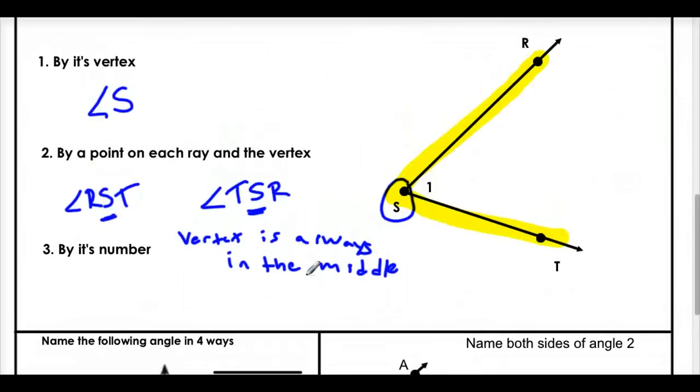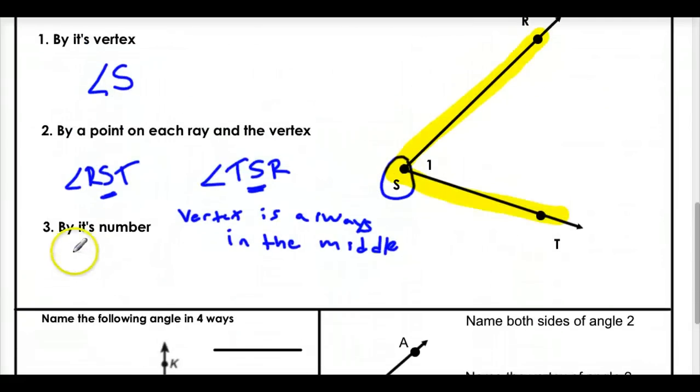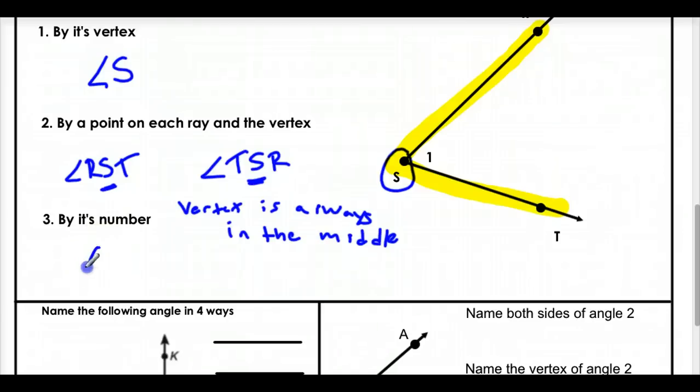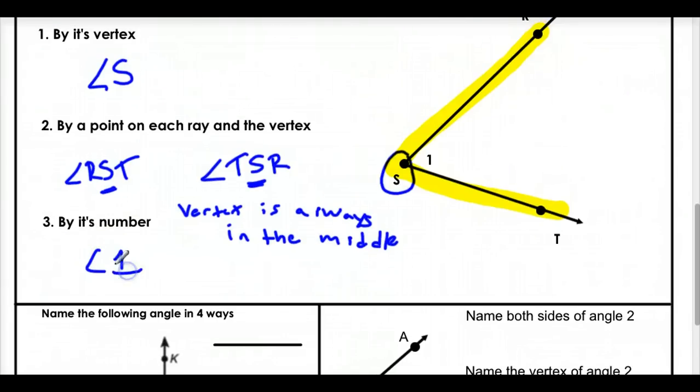You could also name it by its number. Now, if you notice inside, there's a number right there. So we could call this angle number one. So that's another way to name it. Angle one. So you have all these different ways to name your angle.